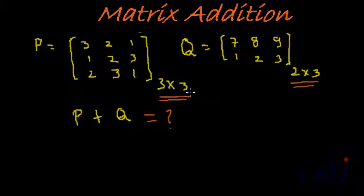Here P is a 3 by 3 matrix whereas Q is a 2 by 3 matrix. Since they are not equal, P plus Q is not possible. This is just to show the importance of the first rule. Always check if the order of the two matrices are equal before you proceed to add the corresponding elements.